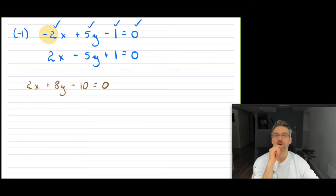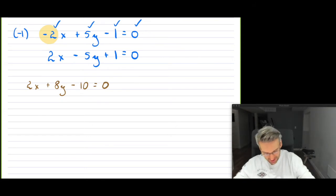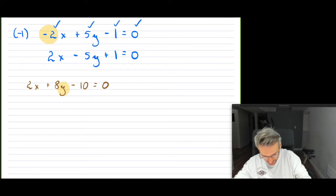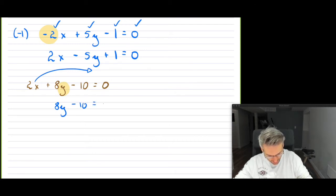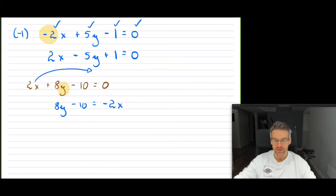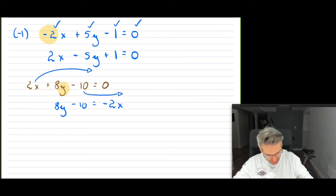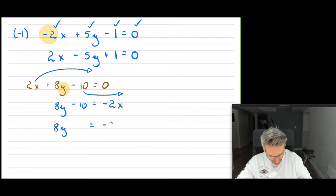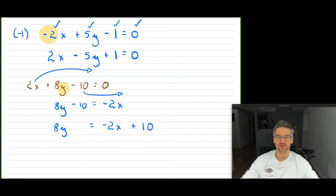From standard form into the Y equals MX plus B form, all you're doing is isolating Y. Take the first example we started with: 2X plus 8Y minus 10 equals zero. To change it back into slope-intercept form, I'm basically isolating for Y. I'm going to bring the 2X over to the other side, giving 8Y minus 10 equals negative 2X. Then bring the negative 10 over as well. So you get 8Y equals negative 2X plus 10. Now divide by the B you have.